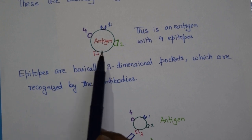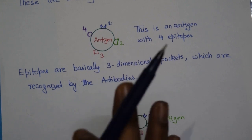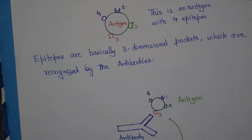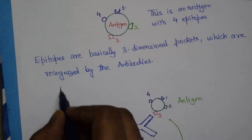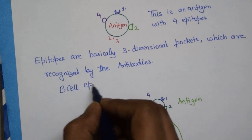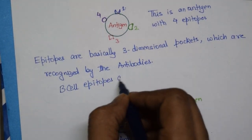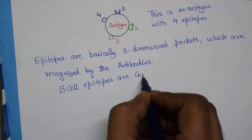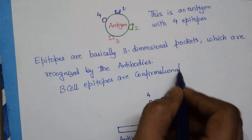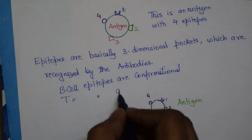But the epitopes which are pertaining to B cell and T cells are little bit different because the epitopes of the B cell are conformational. So B cell epitopes are conformational whereas your T cell epitopes are linear, are always linear.